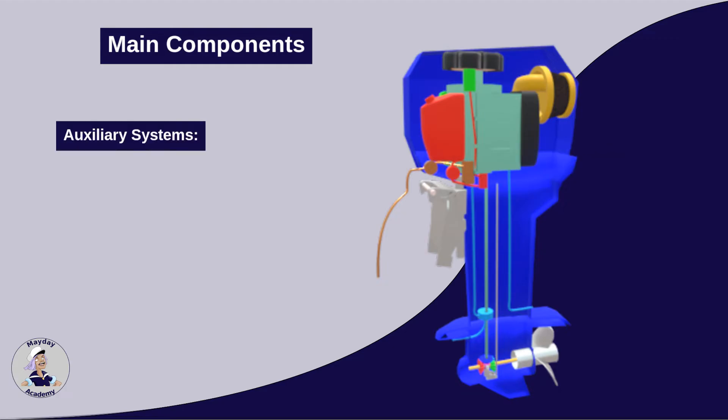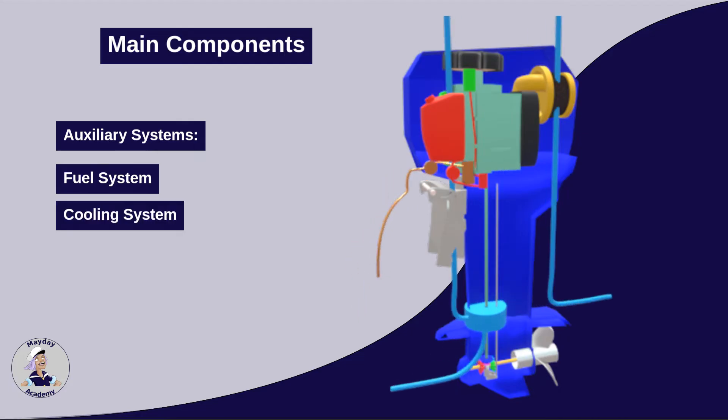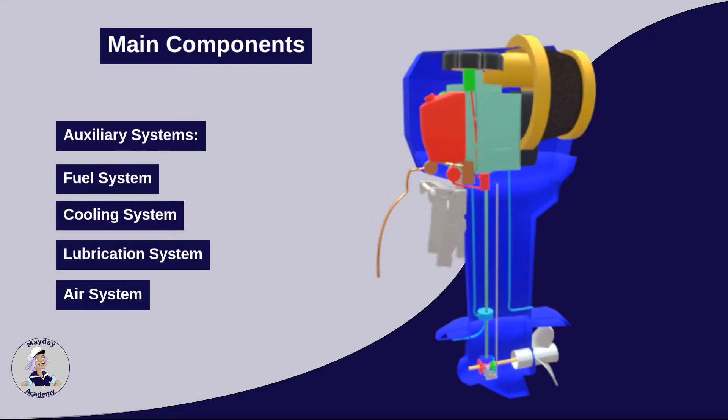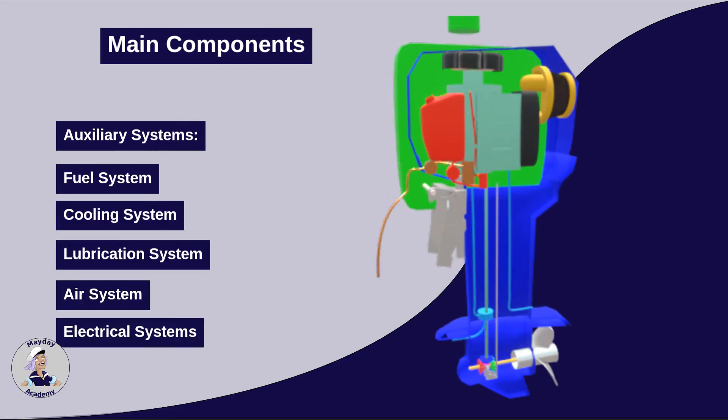The auxiliary systems include systems for fuel delivery, cooling, lubrication, air supply and electrical operations, ensuring the engine runs smoothly and efficiently. We will delve deeper into these systems in later sections.